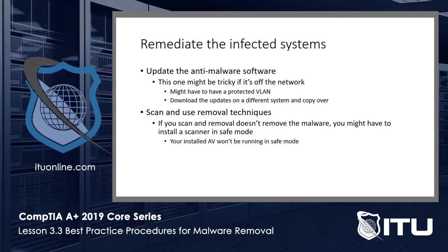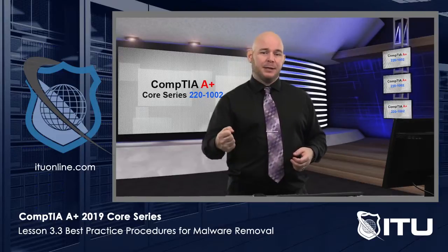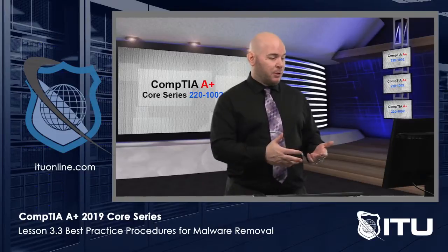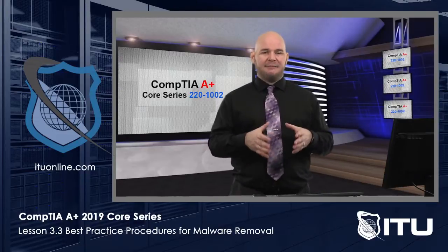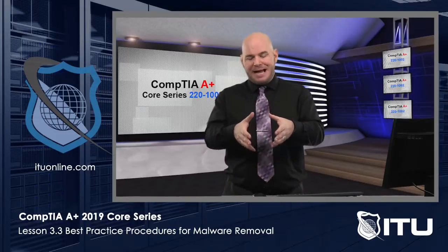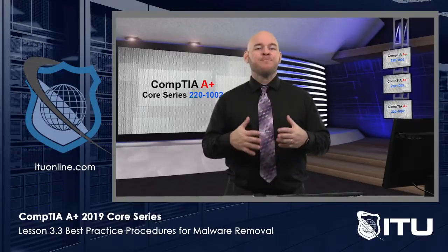Remediating the infected system can get a little tricky. We want to update the anti-malware software, but we just quarantined the machine off the network. You might have to put it on a protected VLAN, or download the updates on a different system and copy them over using a sanitized CD, DVD, or USB thumb drive. Then scan and use removal techniques. If the malware prevents removal, try installing a standalone scanner and running it in Safe Mode — your antivirus isn't running in Safe Mode, so you need that standalone scanner to clean infected files.